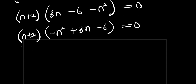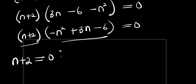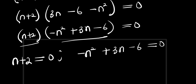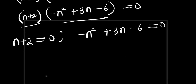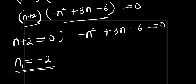So we can equate each factor to 0. We have n + 2 = 0, and we also have -n² + 3n - 6 = 0. Solving the first: n = -2. This is our n₁, our first solution.